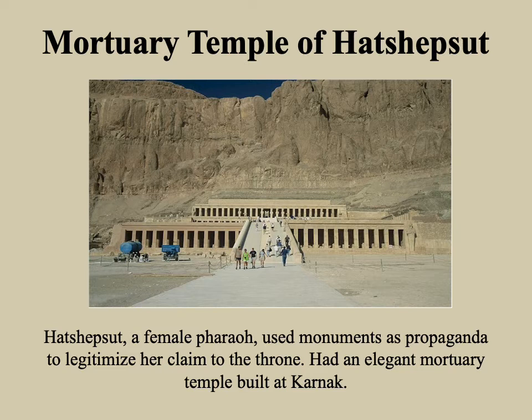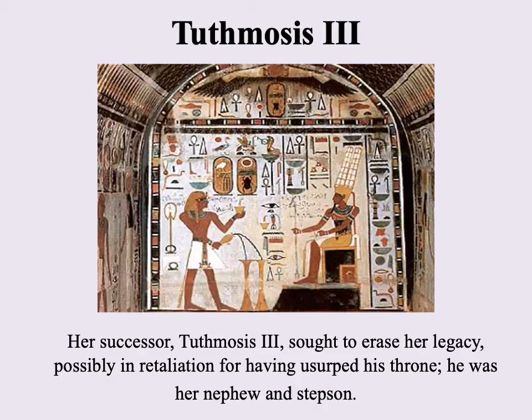Images of Hatshepsut would often show her with a beard, as a way of distracting from the fact of her being a woman — something that in theory probably should have disqualified her from being a pharaoh. Her successor, Thutmose III, would seek to erase her legacy, possibly because he was upset that she had taken the throne away from him. He should have been the next in line — he was both her nephew and stepson. It's also not uncommon in ancient Egypt for a new pharaoh to try to eliminate images and inscriptions referring to another pharaoh — essentially to erase them from history.